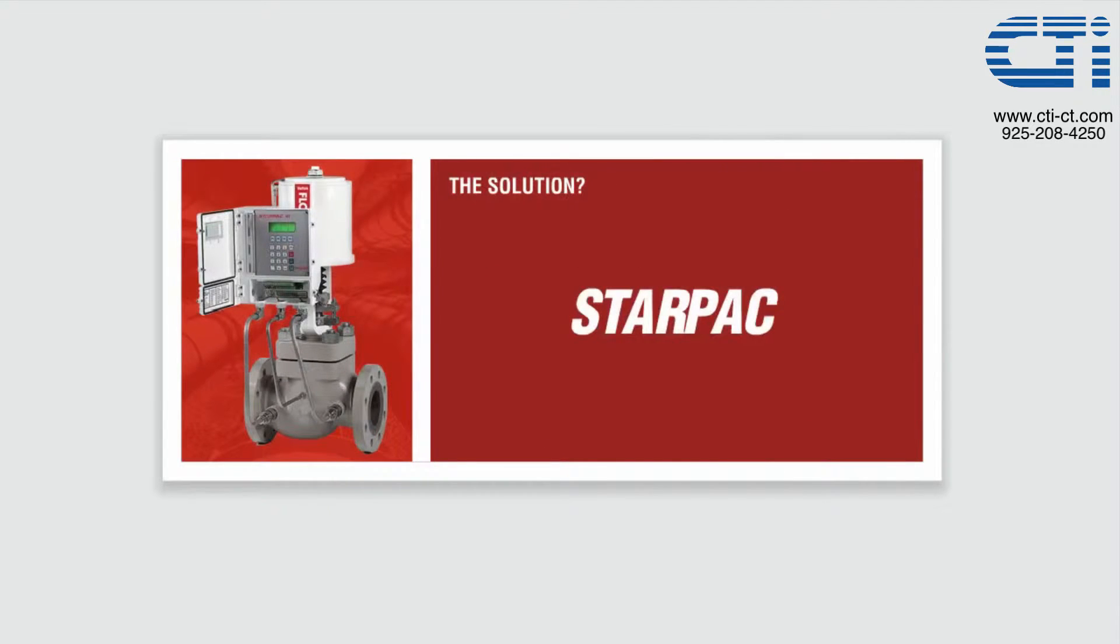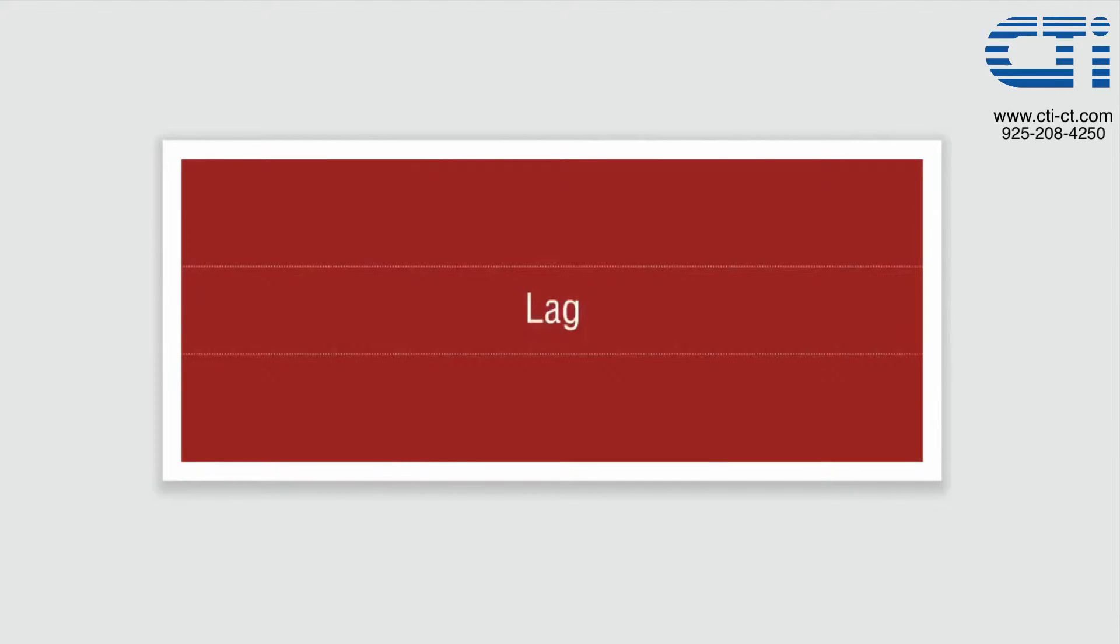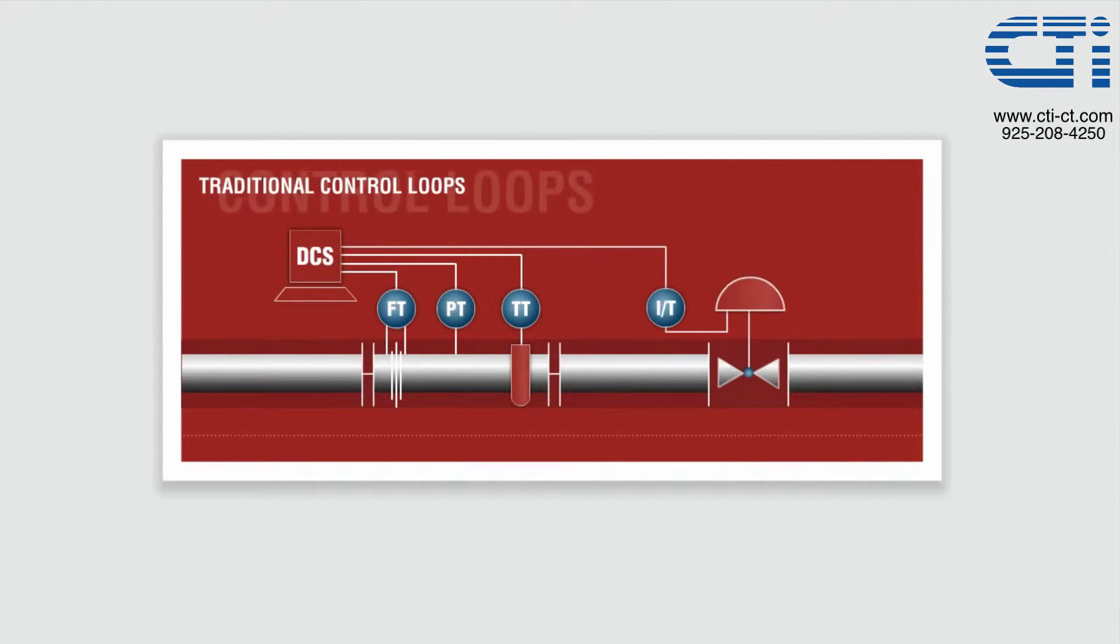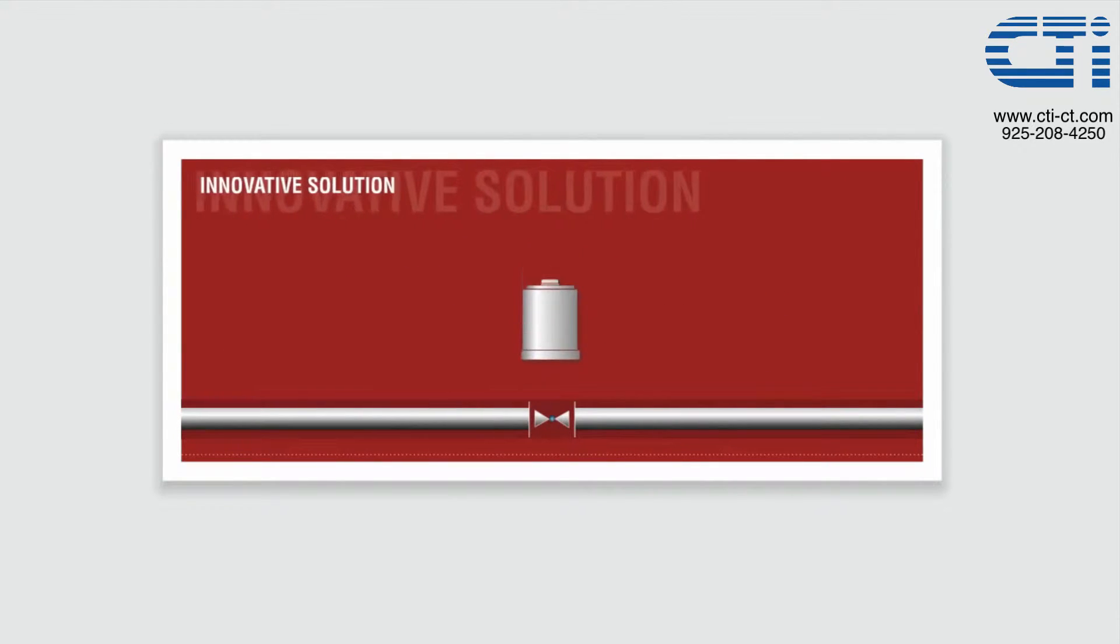The FlowServe StarPak. The StarPak is an innovative solution that solves the problem of lag by embedding the elements of traditional loops into one control valve with local PID control.